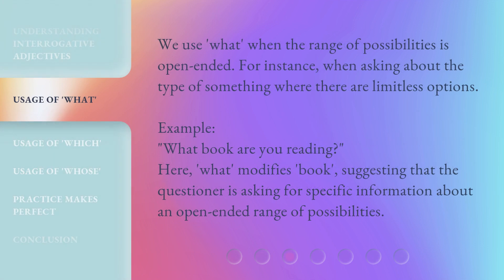We use "what" when the range of possibilities is open-ended — for instance, when asking about the type of something where there are limitless options. Example: "What book are you reading?" Here, "what" modifies "book," suggesting that the questioner is asking for specific information about an open-ended range of possibilities.